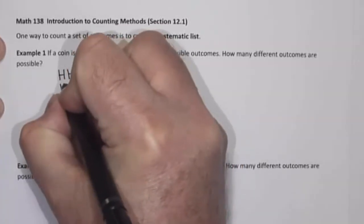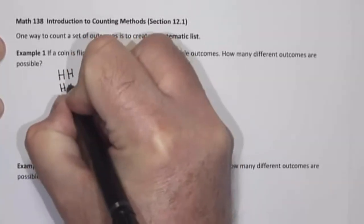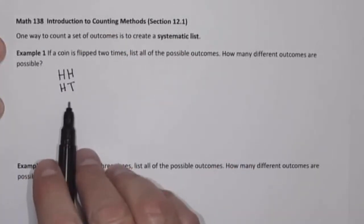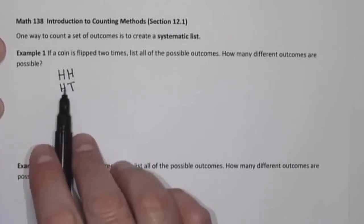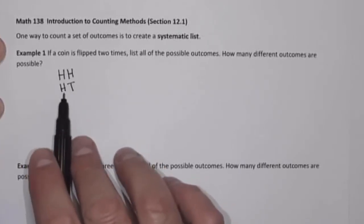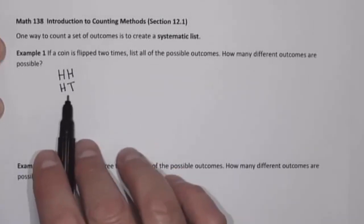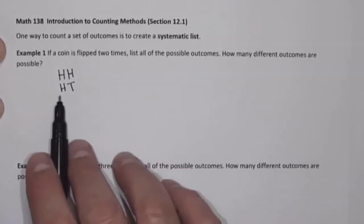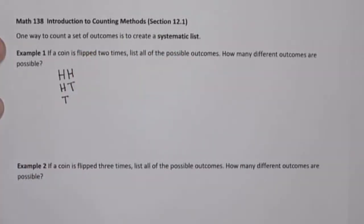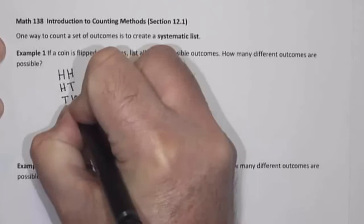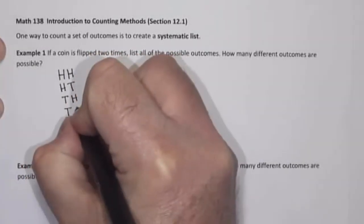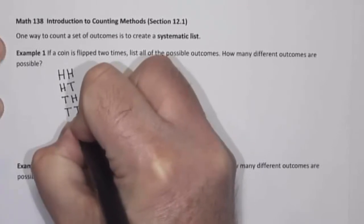It's also possible to get heads on the first flip but then tails on the second flip — that's a second possible outcome. If I get heads on the first flip, those are the only two outcomes that can result: heads on the second flip or tails on the second flip. On the other hand, I could get tails on the first flip, and then heads or tails on the second flip.